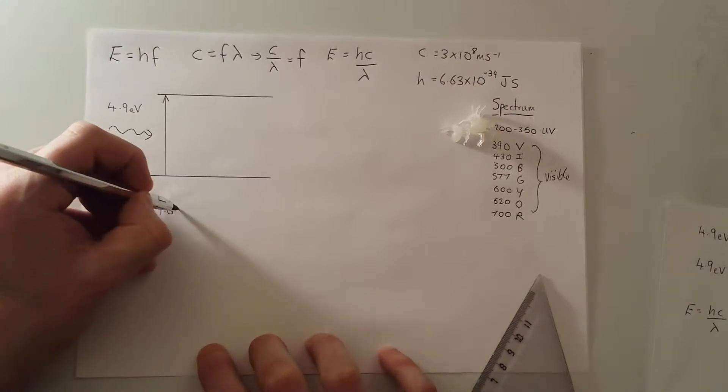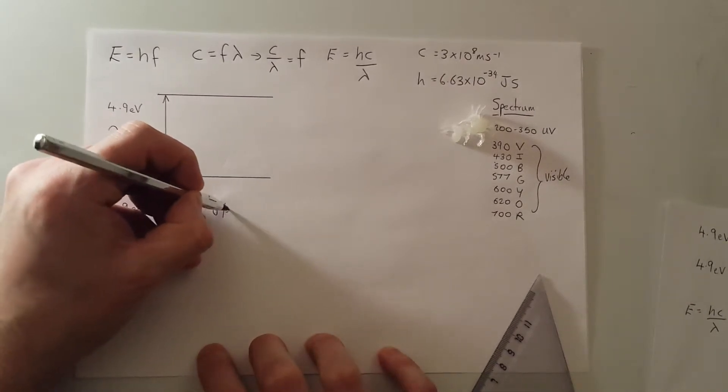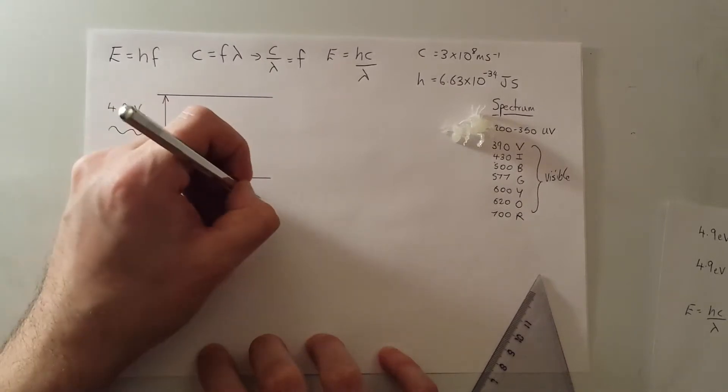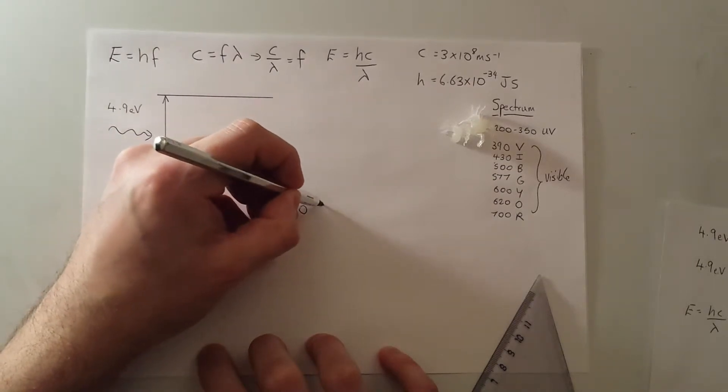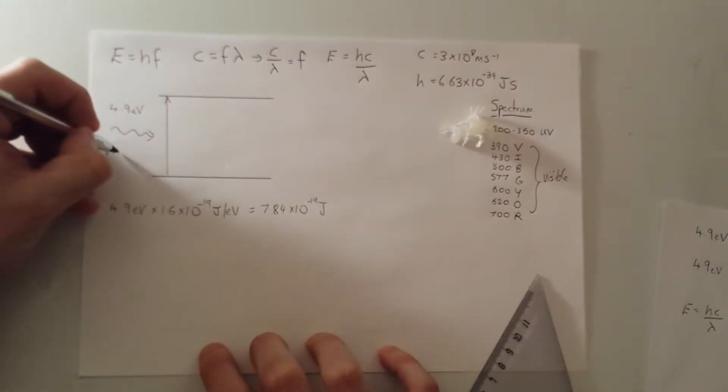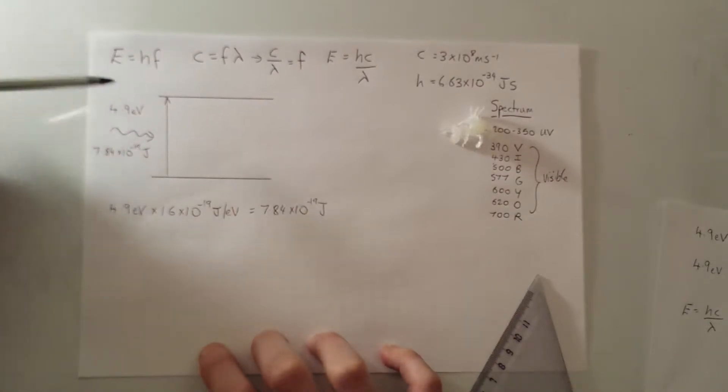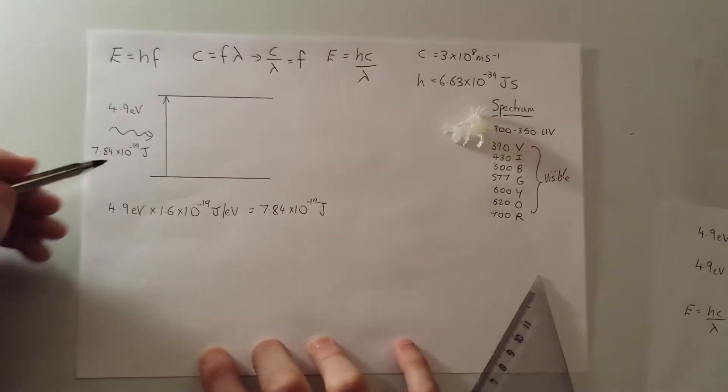So we do 1.6 times 10 to the minus 19 joules per electron volt. It's my conversion factor, which gives me 7.84 times 10 to the minus 19 joules. So this energy here correlates to 7.84 times 10 to the minus 19 joules. So you can see why, as a physicist, it's much easier to use eV normally instead of joules, unless I'm working something out like this much, much quicker.